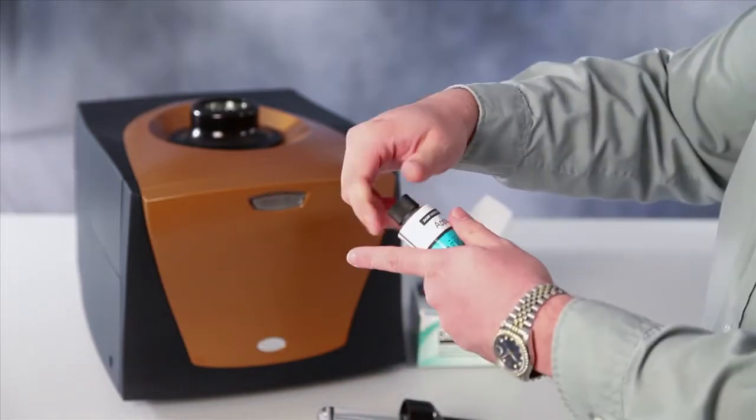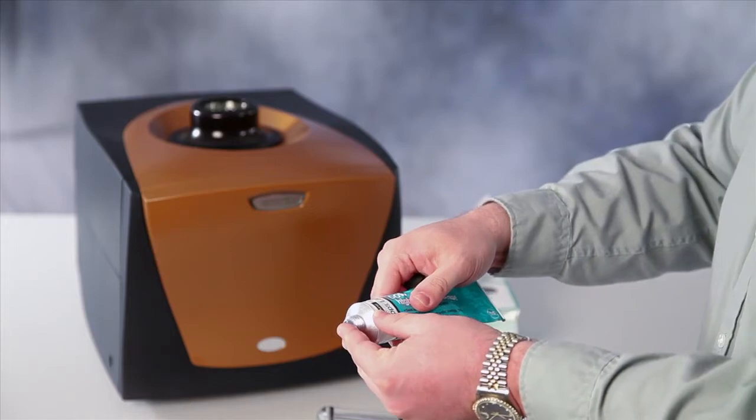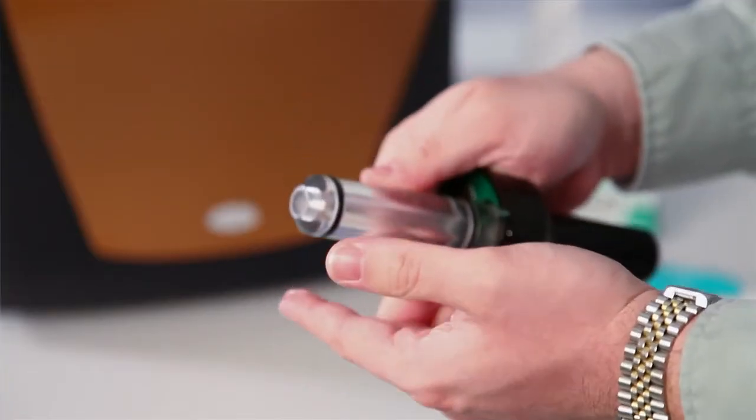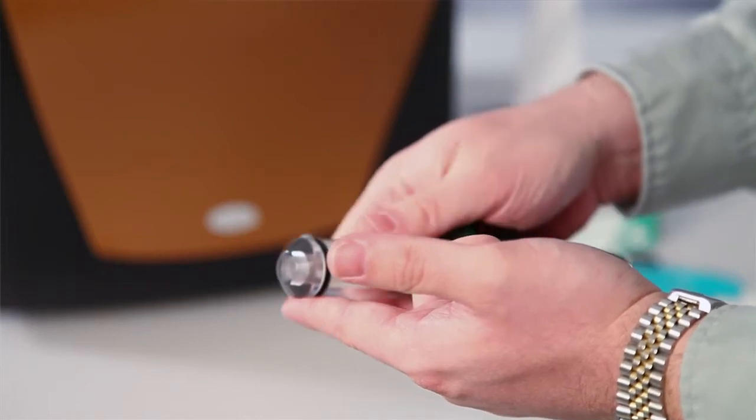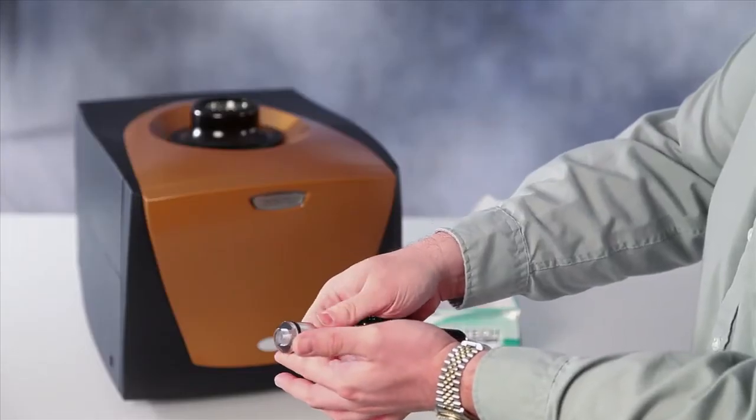Just take some vacuum grease onto your finger and apply this to the O-ring by turning the burette handle around until you have good coverage of vacuum grease on the O-ring.